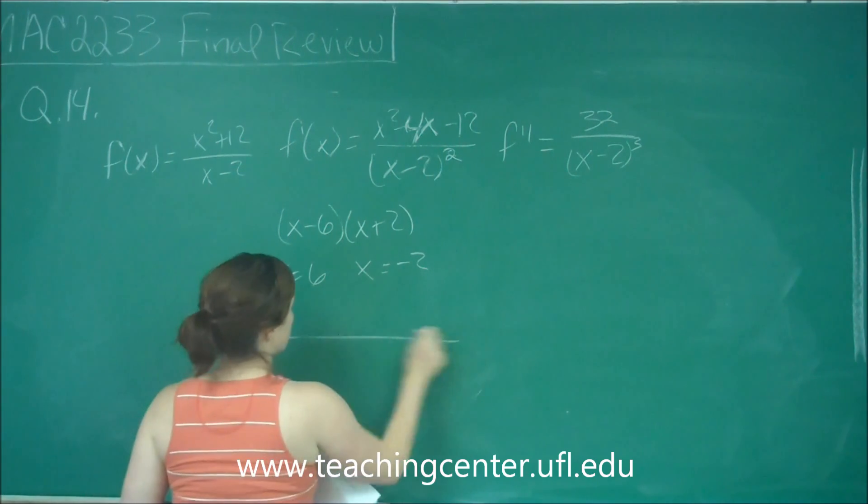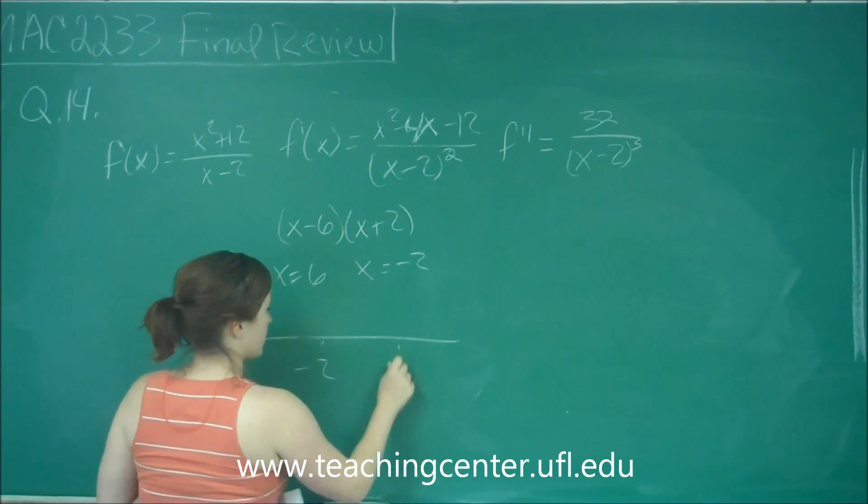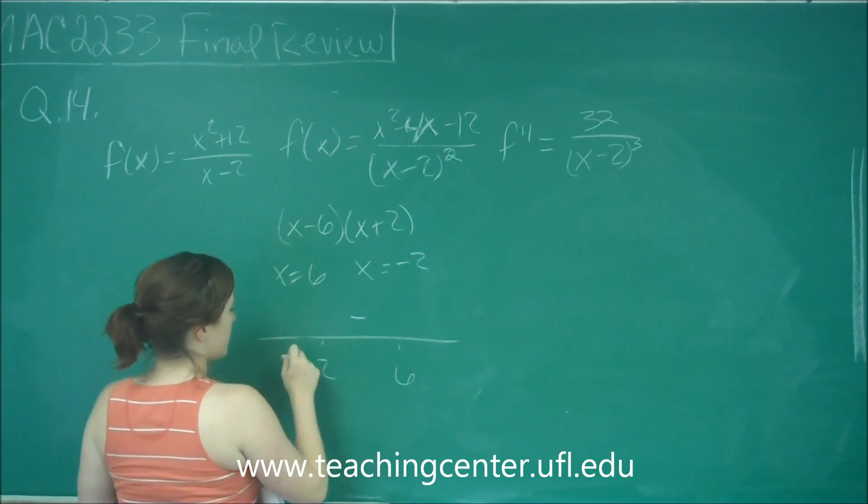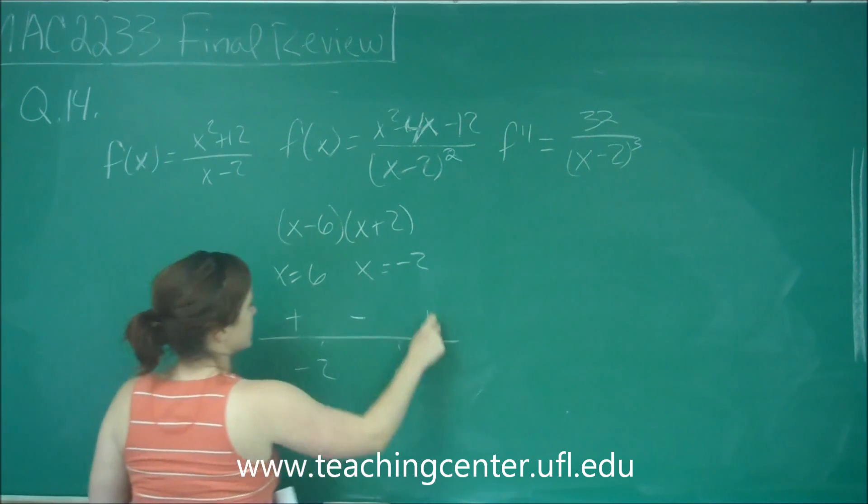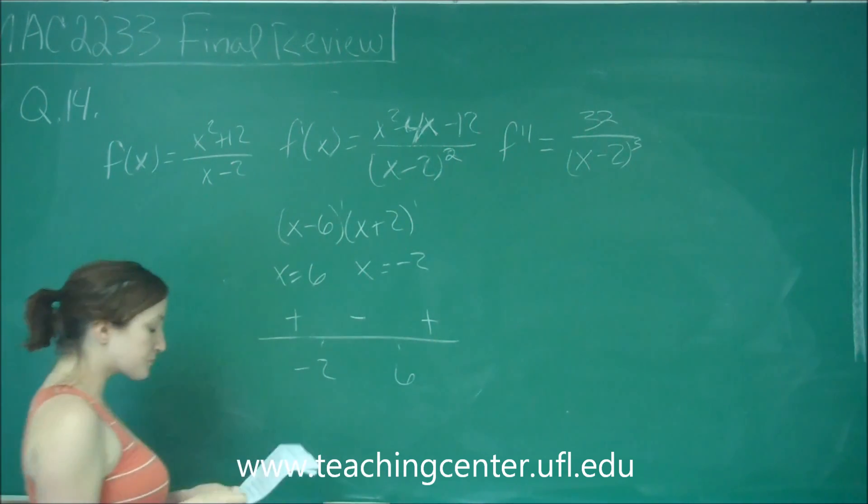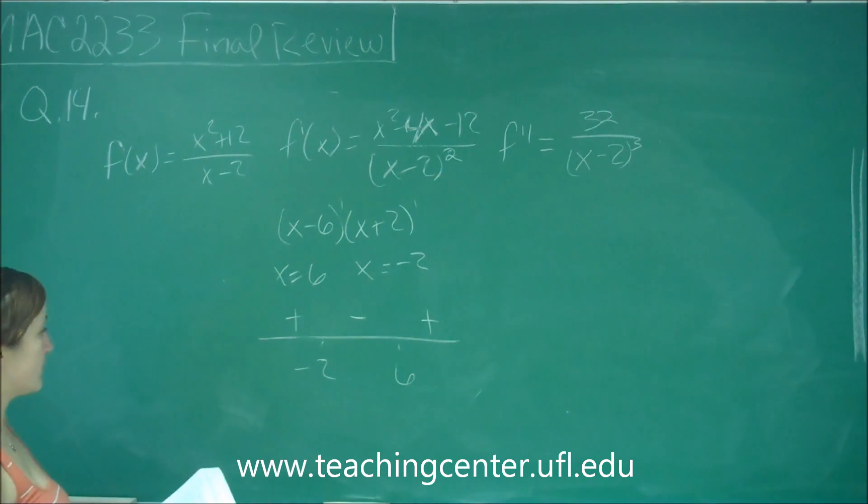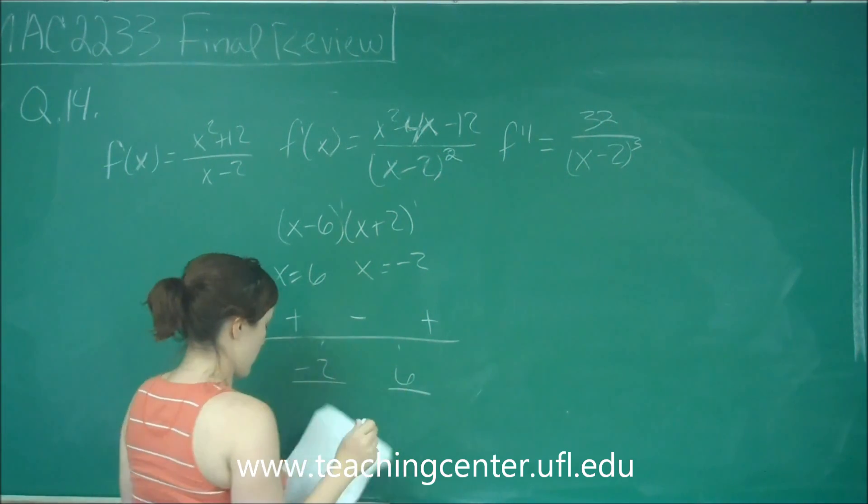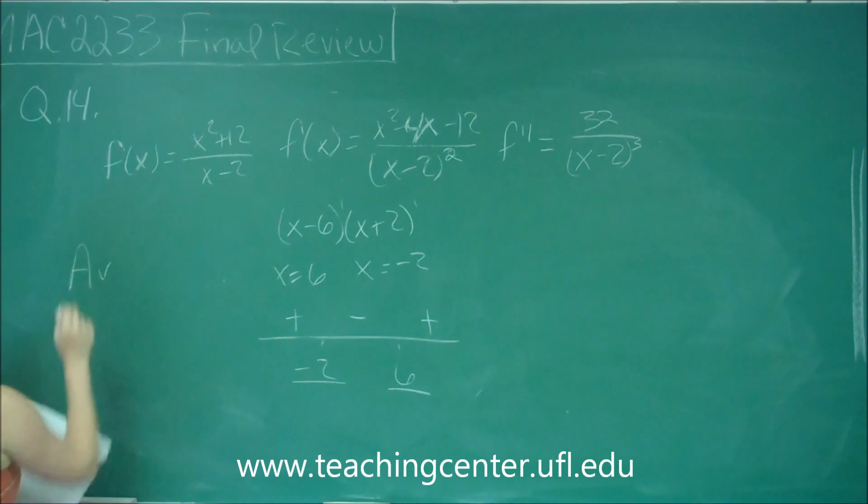Put those on my number line. If I plug in 0, I know that I'll get a negative, and then I know they're going to alternate because those powers here are odd. And so it is true, f does have a relative maximum at negative 2 and a relative minimum at 6. So A is okay.